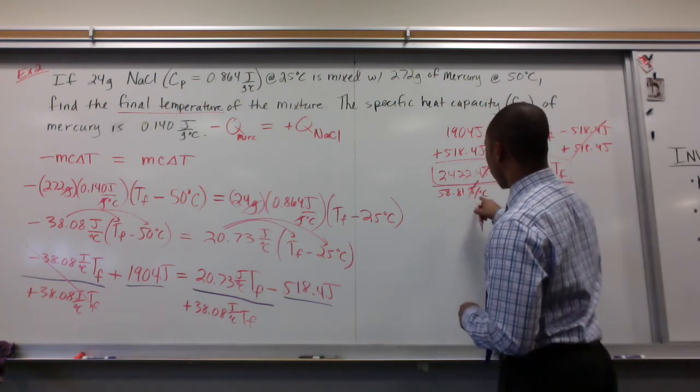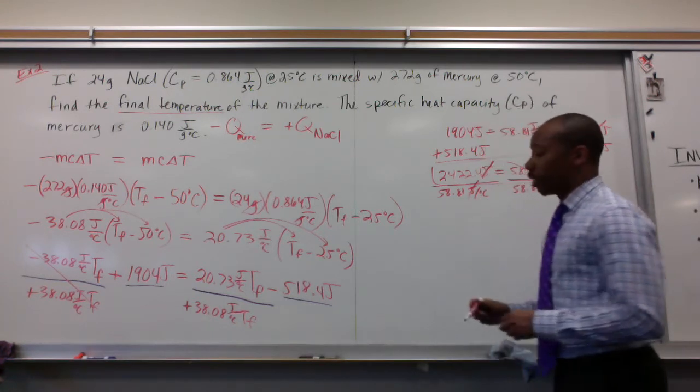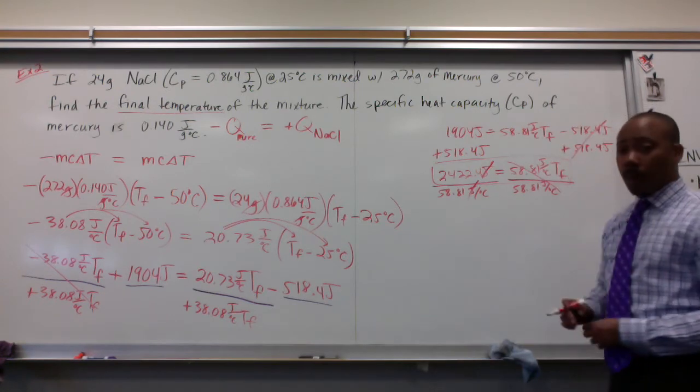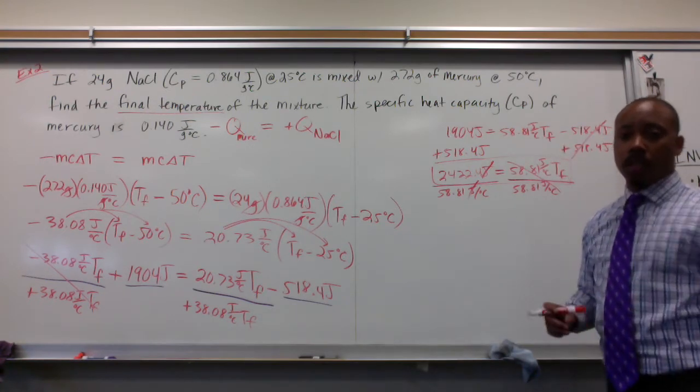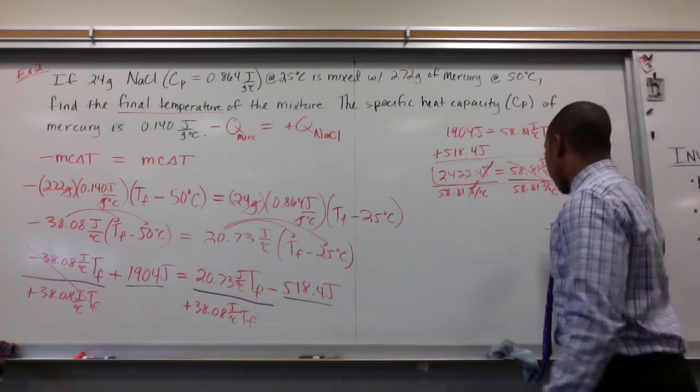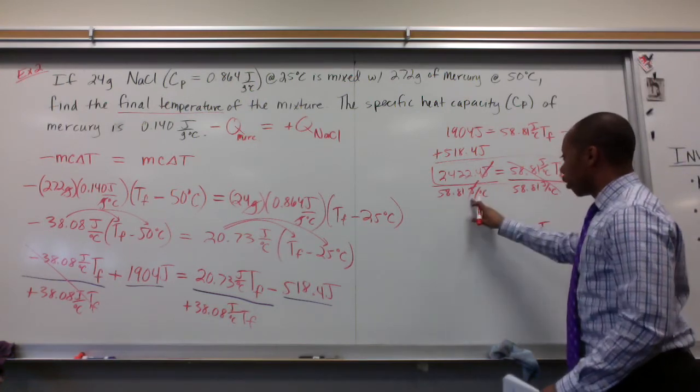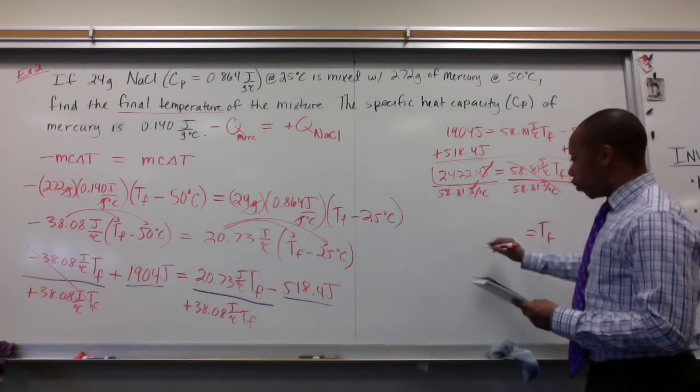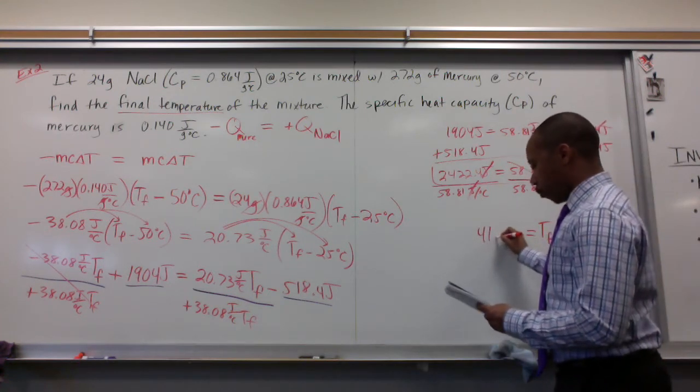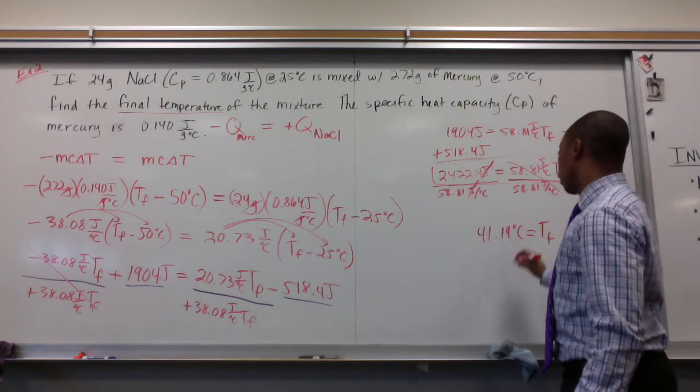My joules cancel out, and I'm left with just degrees celsius, and that makes sense because we're solving for temperature, the final temperature. And when I do so, I get final temperature equal to 41.19 degrees celsius.